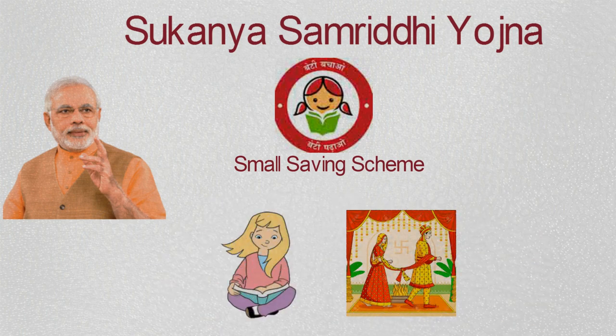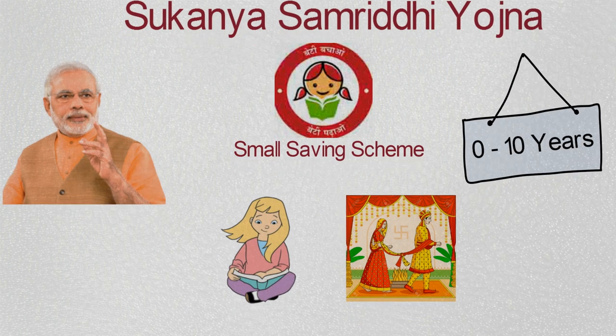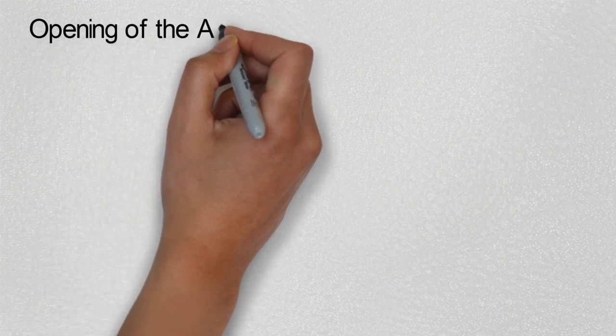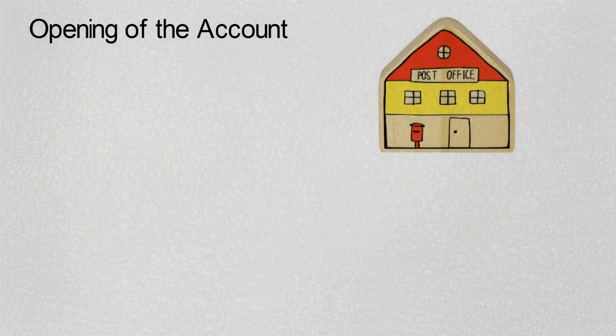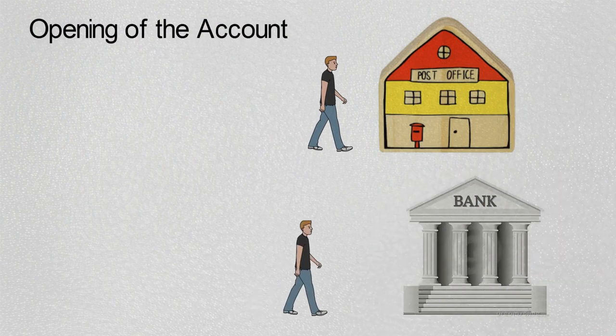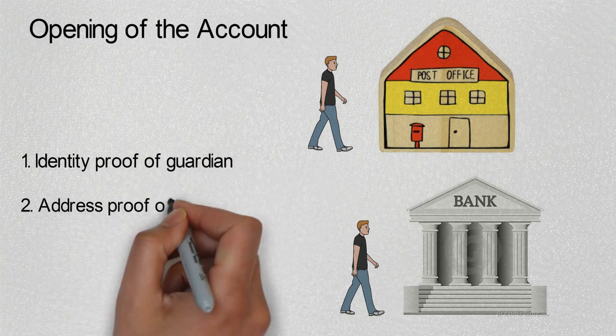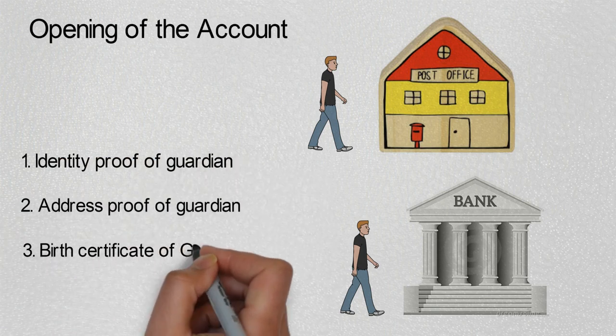This account can be opened in the name of a girl under the age of 10 years. To open this account, you have to visit the nearest post office or government authorized bank with three documents: identity proof of the guardian, address proof of the guardian, and birth certificate of the girl child.